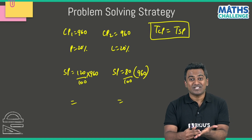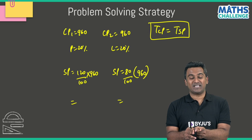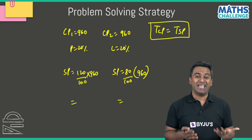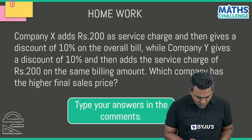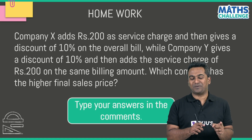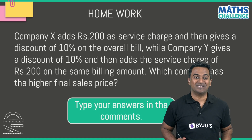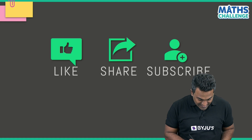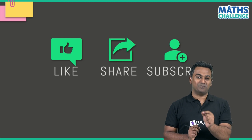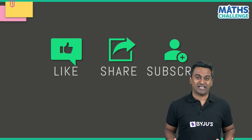So remember: when the selling prices are the same and the profit and loss percentages are the same, there will always be a loss. But when the cost prices of the items are the same and the profit and loss percentages are the same, there will be neither profit nor loss. This is your homework — give it a shot and type your answers in the comments. If you like what you've seen, hit the like button — it means a lot to us.